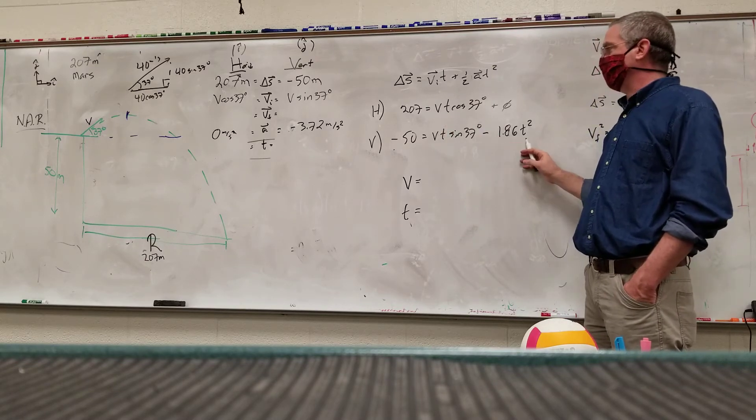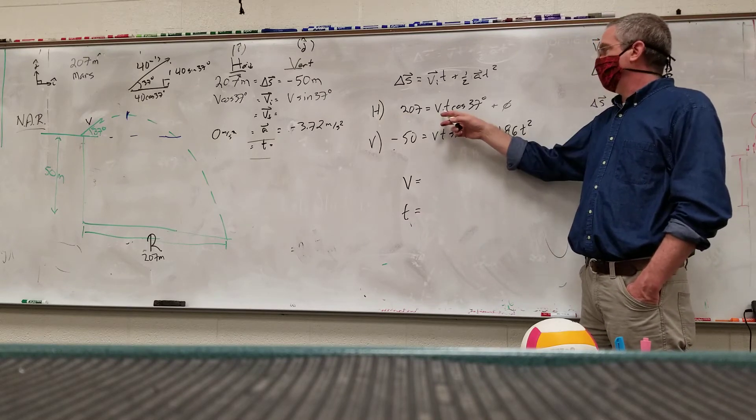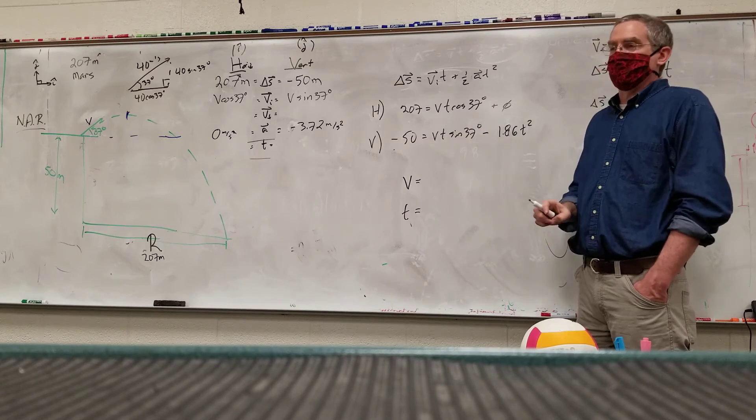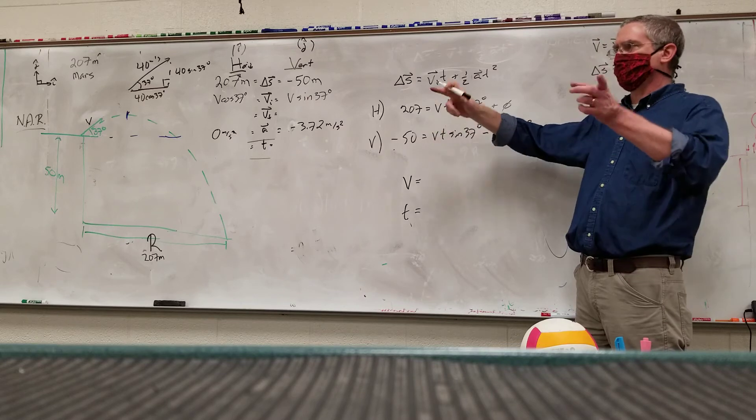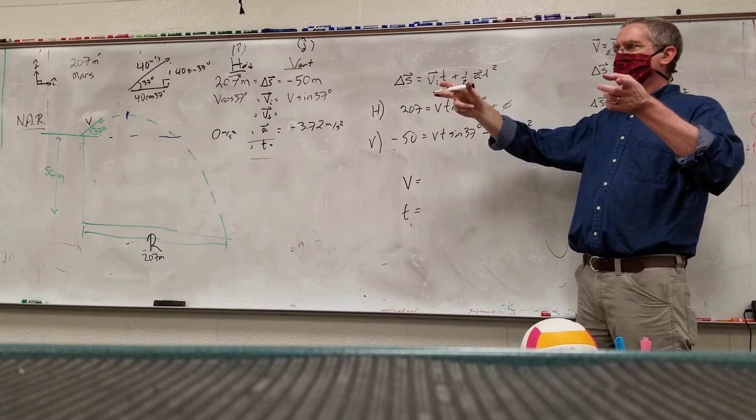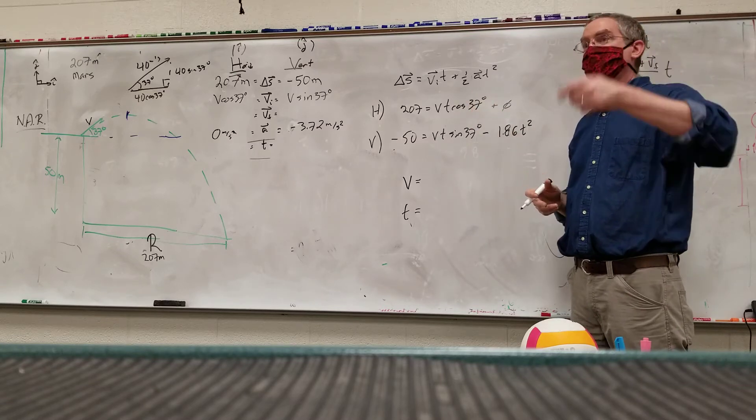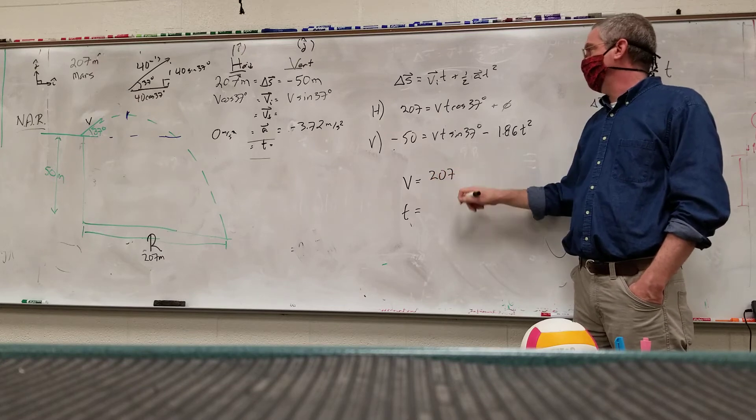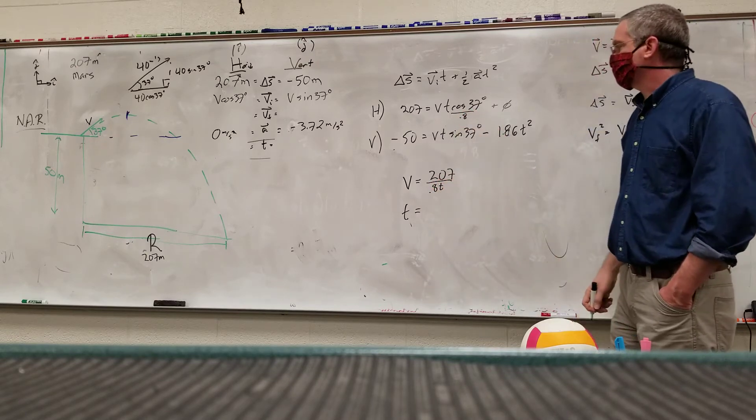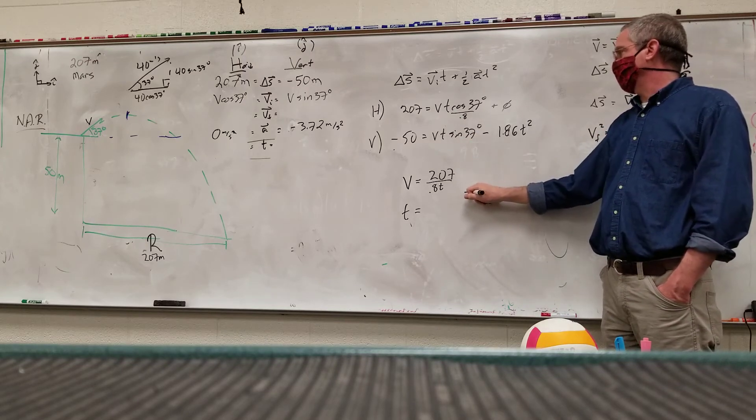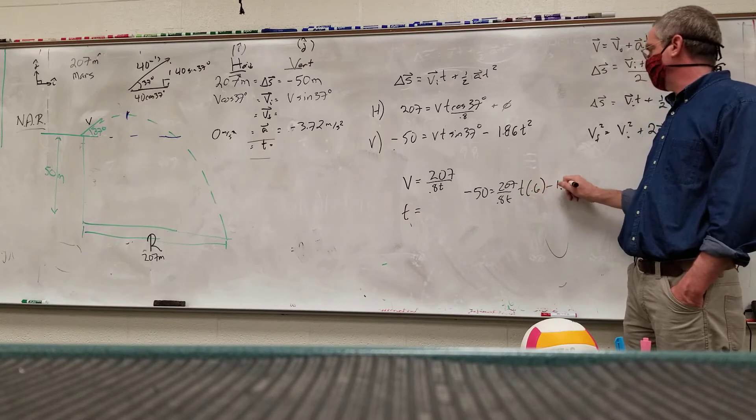Or solve for V, and then we just plug it into this one. There's another alternative. So we think in solving for T in this equation. Let's solve for V for the first one. So it's 207 over, that's roughly 0.8, so 0.8 T. Plug into the second one, so I have negative 50 equals 207 over 0.8 T times T times 0.6 minus 1.86 T squared.